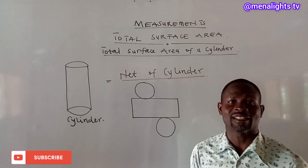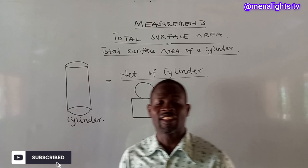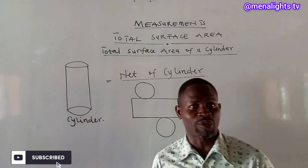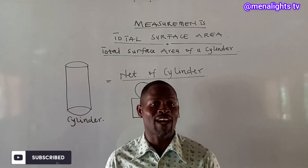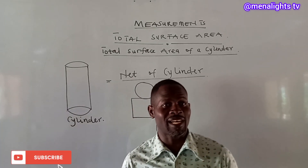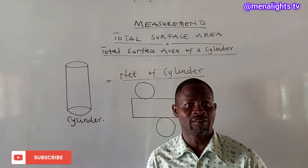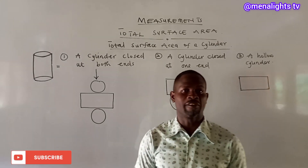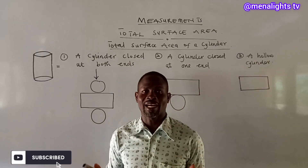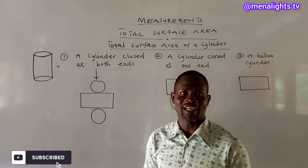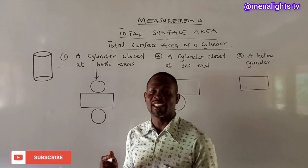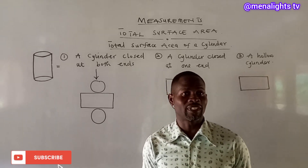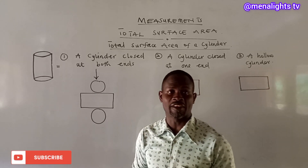So now we are going to look at the three types of cylinders that we have, and then how to find the total surface area. To find the total surface area, we look at the kind of cylinders that we have and the formulas that we use to find their total surface areas.